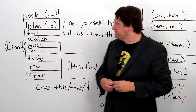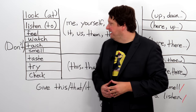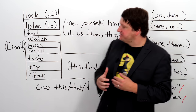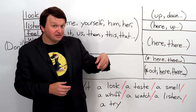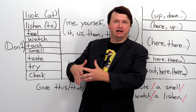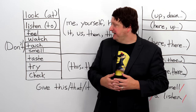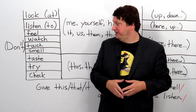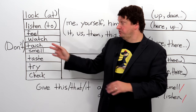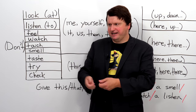Next, smell. You smell with your nose. You can say smell this, smell that, smell here, smell there. Or don't smell that — for example, if it's ammonia or something very strong, a chemical that can really affect you and your brain. You might tell someone don't smell that, or don't touch that.